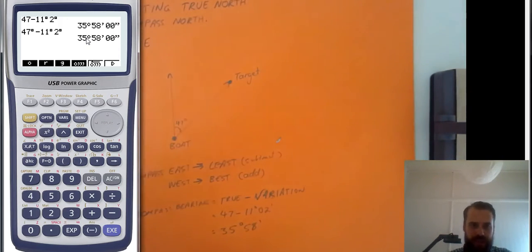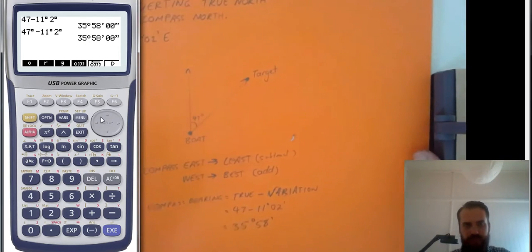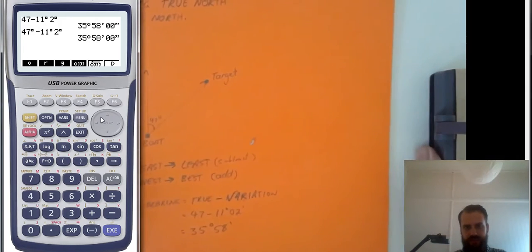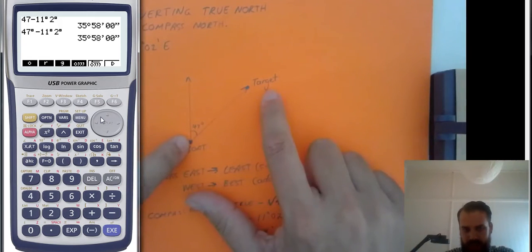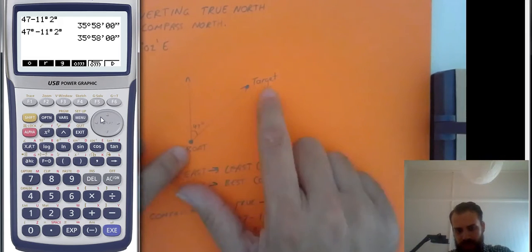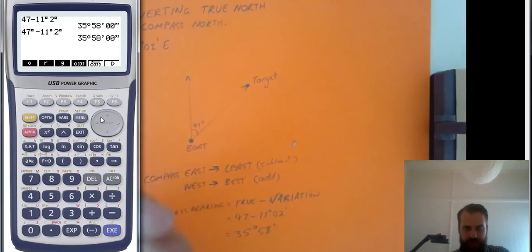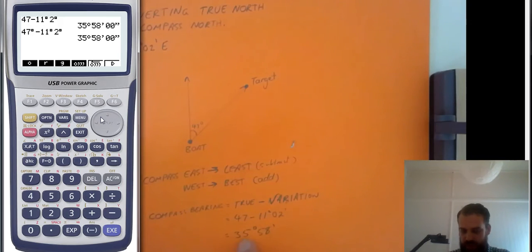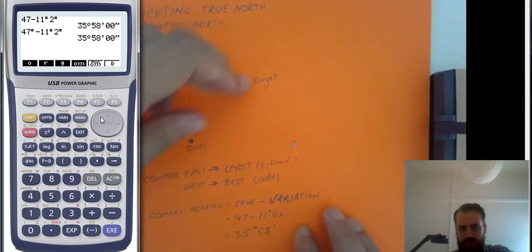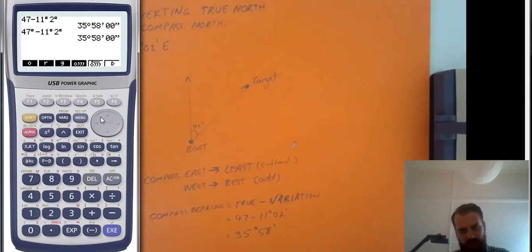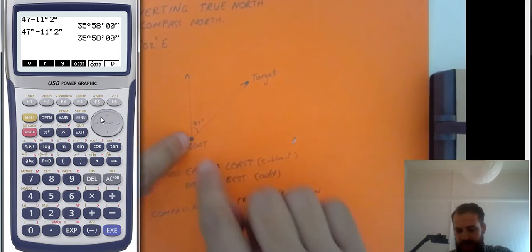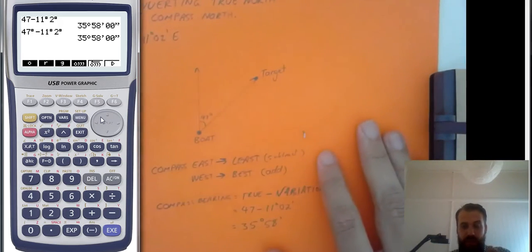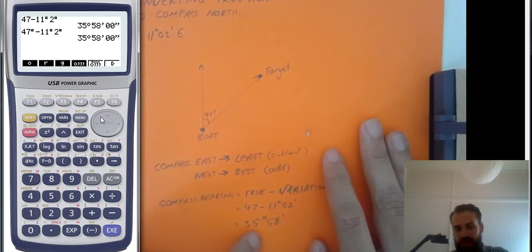So what that means for us, what this means for us is that if we're in our boat and we see on our map that the bearing from the boat to the target is 47 degrees, our actual compass bearing that we should follow is 35 degrees 58 minutes. If we're looking at a map and we see that that is a 47 degree angle, then when we're in our boat, we're going to have to sail actually on this angle.